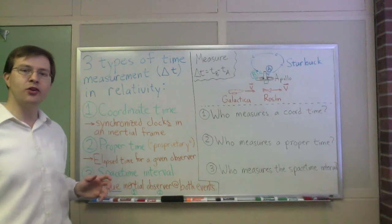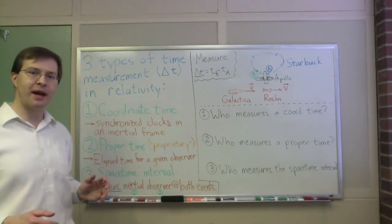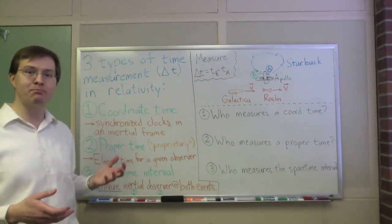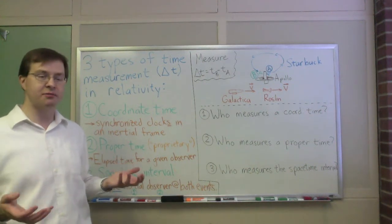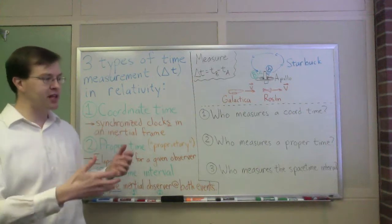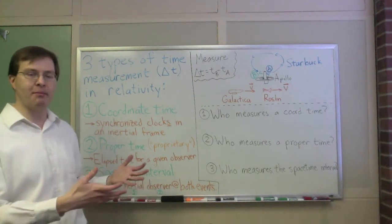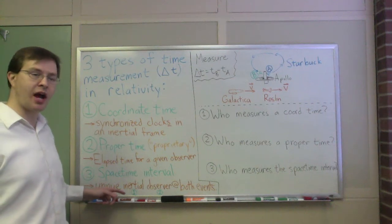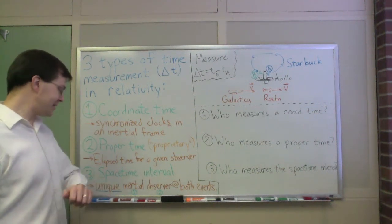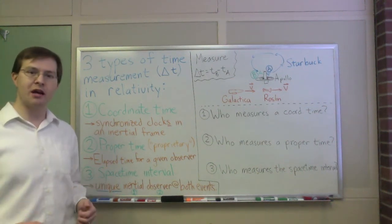The idea is if you can find an observer from whose perspective events A and B happen at the same place, that is, an observer who just experiences themselves sitting still, and event A happens there, and then a bit later, event B happens there, that observer's measurement of time, their own proper time, is the unique space-time interval between those two.